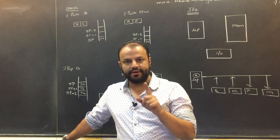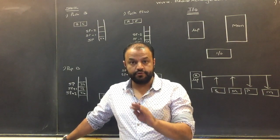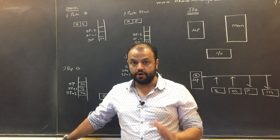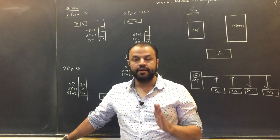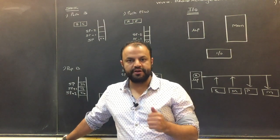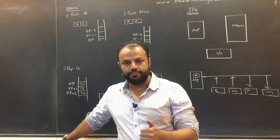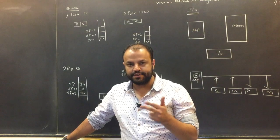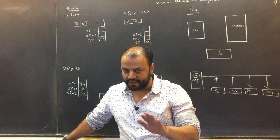A register pair is always indicated by its higher byte. So for BC pair, you write B, not C. There is no instruction like push C or push E. You can write push B for BC pair, push D for DE pair, and push H for HL pair.